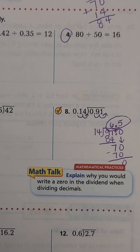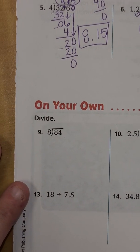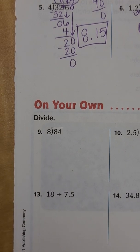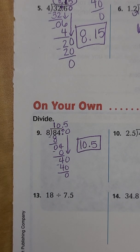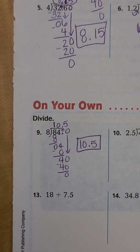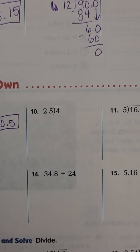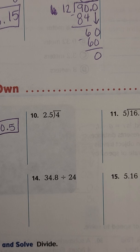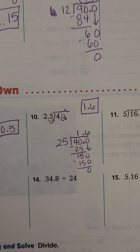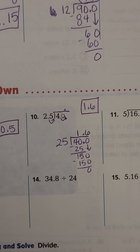Now do number nine on your own — pause the video, do it yourself, and check your answers. If you got 10 and 5 tenths, you are correct. Double check your work and make sure your decimal is in the correct place and you added a zero where needed. Now pause the video and do number ten on your own. Here should be your correct answer — make sure you moved your decimals because you can't have a decimal on the outside of your house. Whatever you do on the outside you do to the inside. You should have ended up with 1 and 6 tenths.